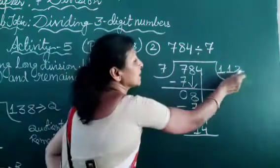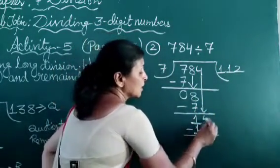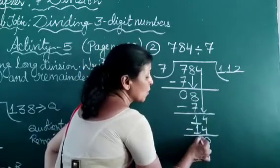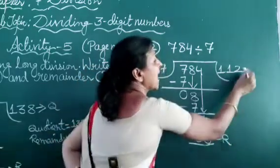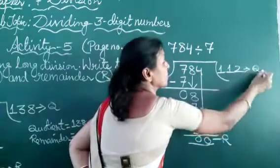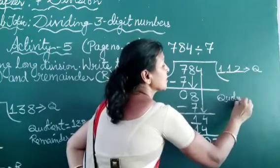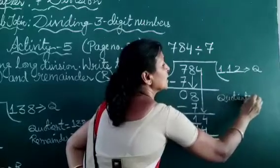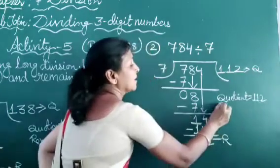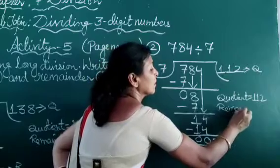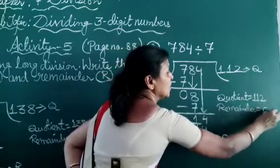If we multiply these 2 then this number comes. Now we subtract it — 0, 0. This is the remainder and this is the quotient. Quotient is equal to 112 and remainder is equal to 0.